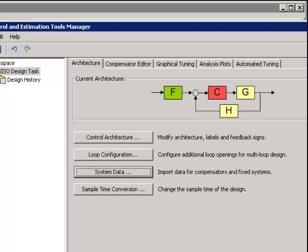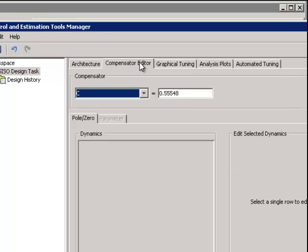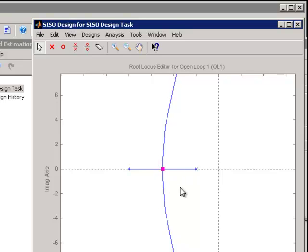And let's see how close our gain estimation was from the beginning. I'm going to move the pole so they're right together. Remember, you can move over and look here at the compensator editor. 0.55. When we just winged it by hand, we were getting 0.56. Not bad at all.